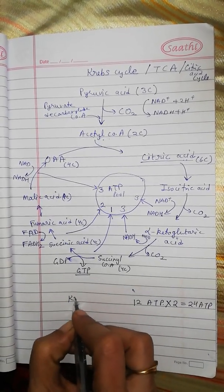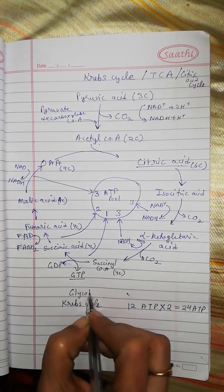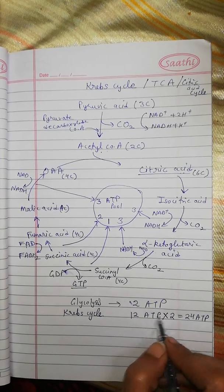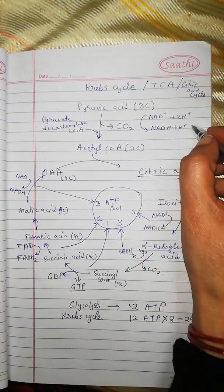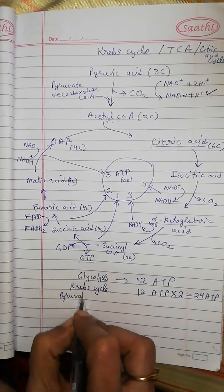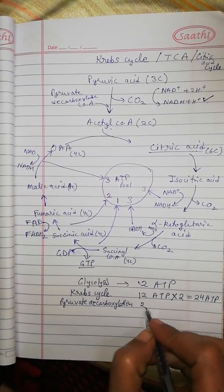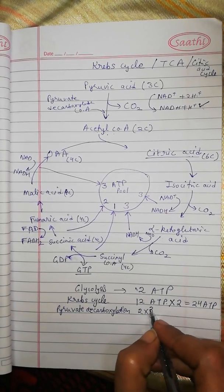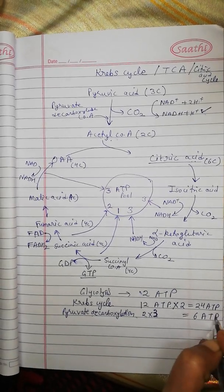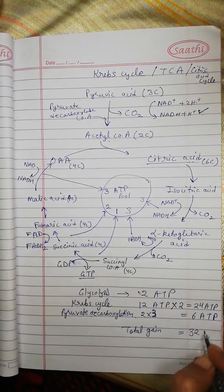We can calculate the total number of ATP molecules. In glycolysis there is a net gain of 2 ATP molecules. In Krebs cycle, 24 ATP molecules are formed. Also, two NADH molecules are formed during pyruvate decarboxylation — since one NADH is equivalent to three ATP, two NADH gives 6 ATP. So the total gain of ATP is 32 to 38 ATP molecules.